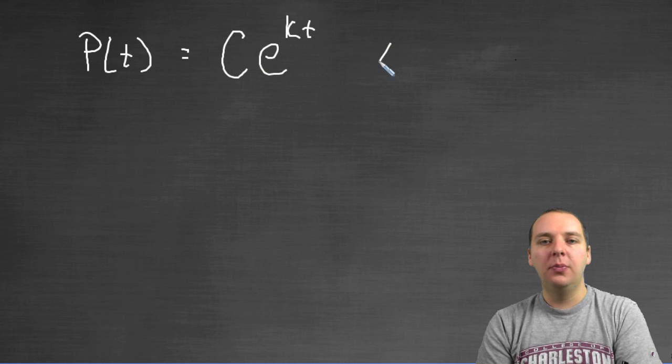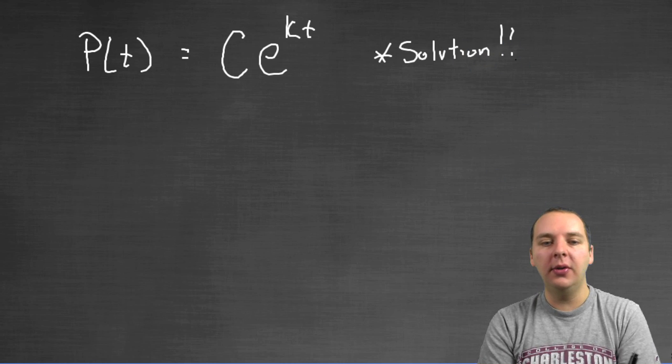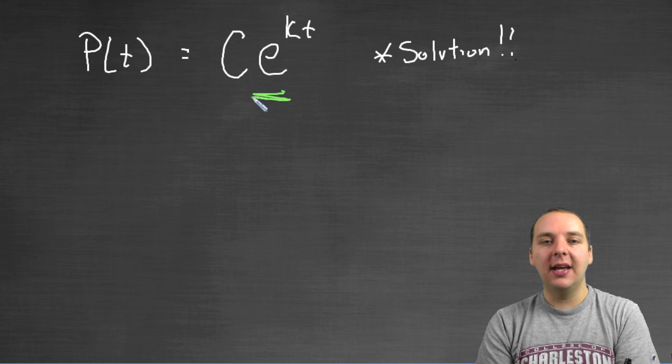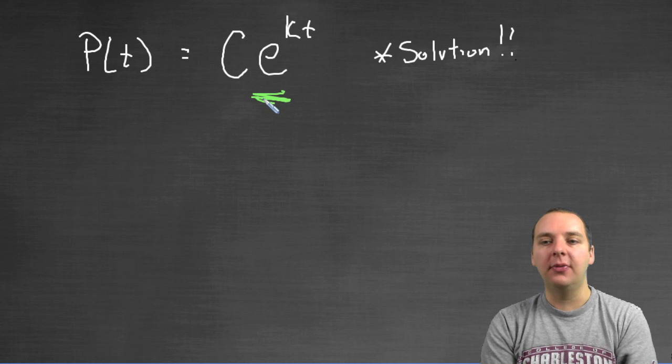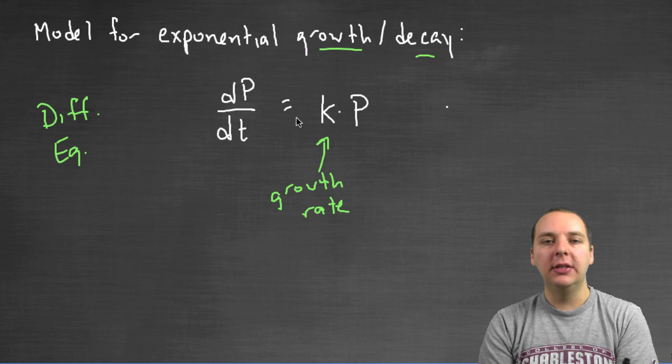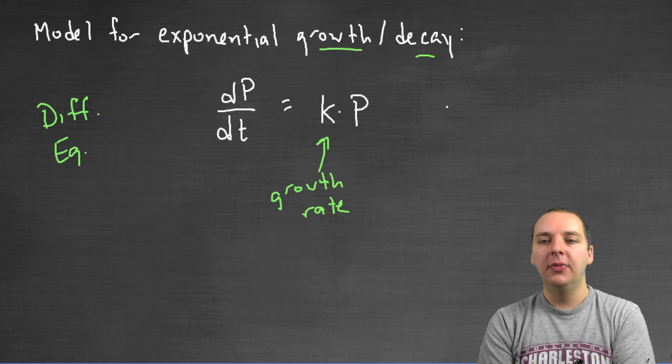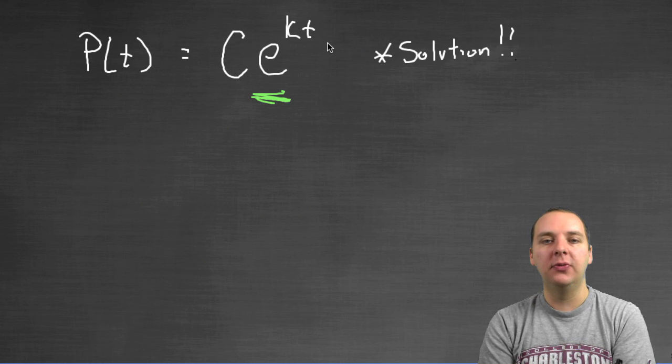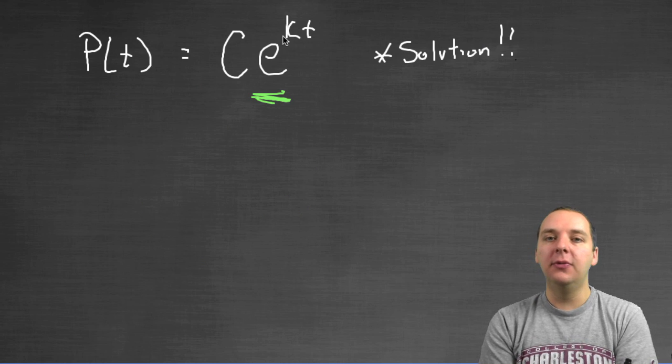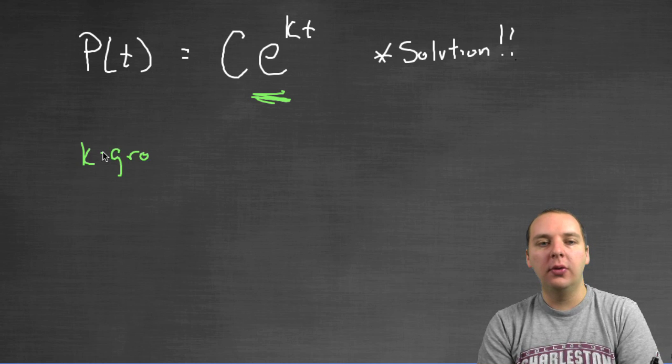But nevertheless, this guy will be the solution, this will be the solution to that differential equation. And lo and behold, check out, what is this guy? This is an exponential graph. And so, this is an exponential function. And so, the solution to this model, where the rate of change is proportional to the size of the quantity, the solution is an exponential function. And we see some influencing factors. k, as we said earlier, is going to be the growth rate.